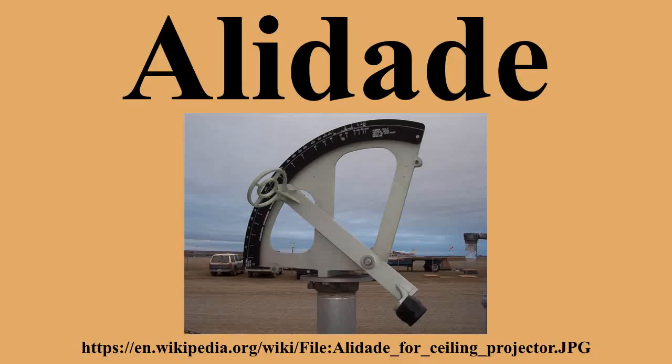At one time, some alidades — particularly those used on graduated circles, as on astrolabes — were also called diopters. With modern technology, the name is applied to complete instruments such as the plane table alidade. The word in Arabic signifies the same device. In Greek and Latin, it is respectively called 'dioptra' and 'linea fiducia,' or fiducial line.